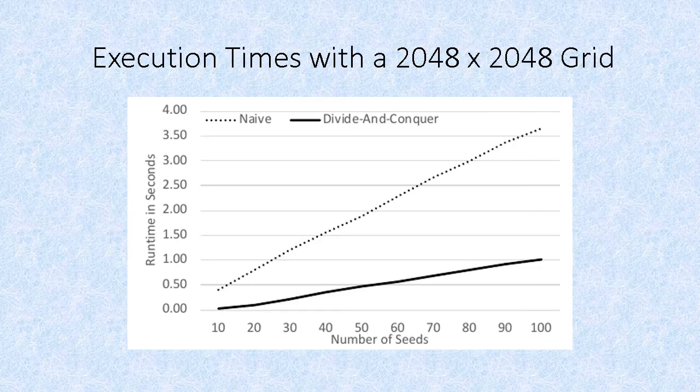When testing with different seed amounts on a 2048 by 2048 diagram, the divide-and-conquer method again outperformed the naive approach.